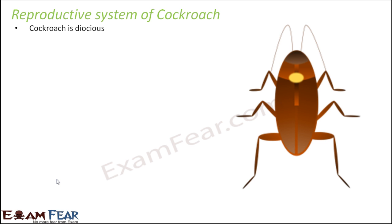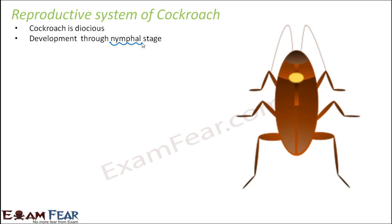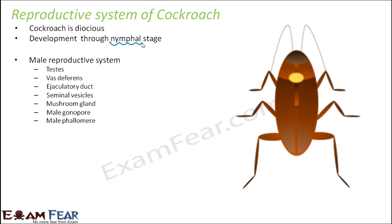The cockroach is dioecious, meaning they have separate male and female sexes — there will be one male cockroach and another female cockroach, so both male and female reproductive organs cannot be present in the same organism. Development occurs through a nymphal stage, so it is indirect development. When a new baby is born it is not yet a cockroach; it goes through an intermediate nymphal stage before developing into an adult.